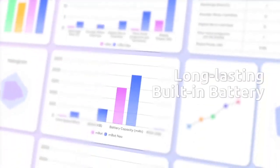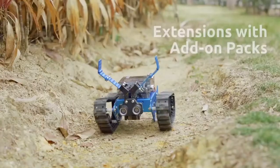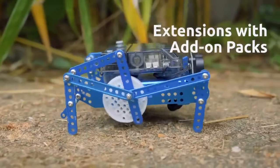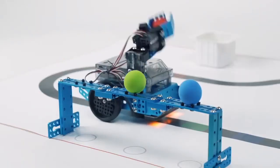M-Bot Neo comes with an integrated rechargeable battery. It eliminates the need to purchase separate batteries. M-Bot Neo can transform into various forms with more parts and modules to fulfill tasks in different environments.